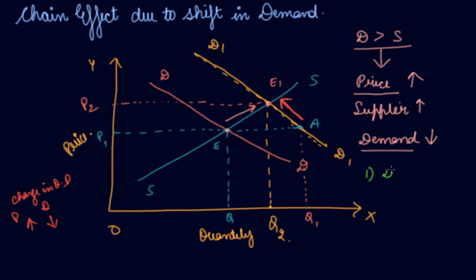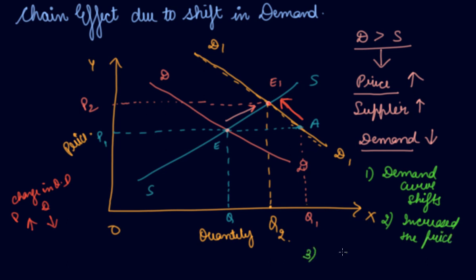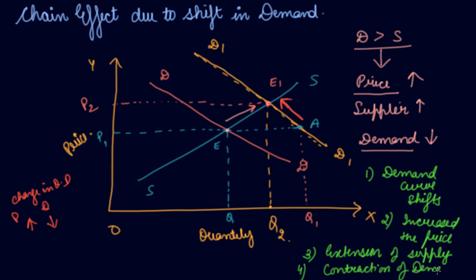To summarize the chain effect step by step: first, a factor other than price causes a rightward shift in the demand curve. Second, the rightward shift increases the price. Third, the higher price causes an extension of supply. Fourth, the higher price causes a contraction of demand. Simultaneously, supply extends and demand contracts until a new equilibrium E1 is reached, where D1 equals the supply curve SS.